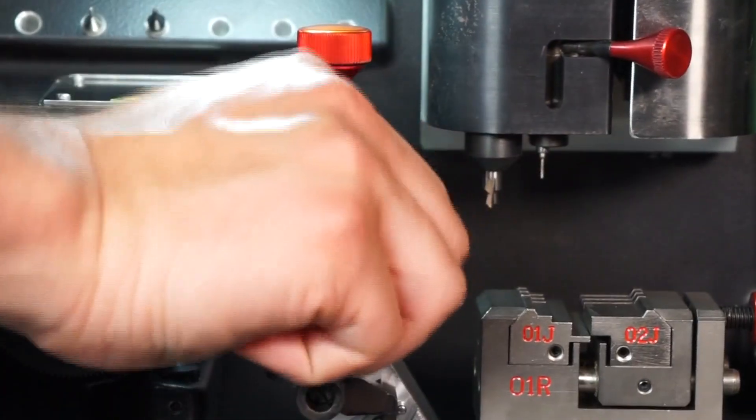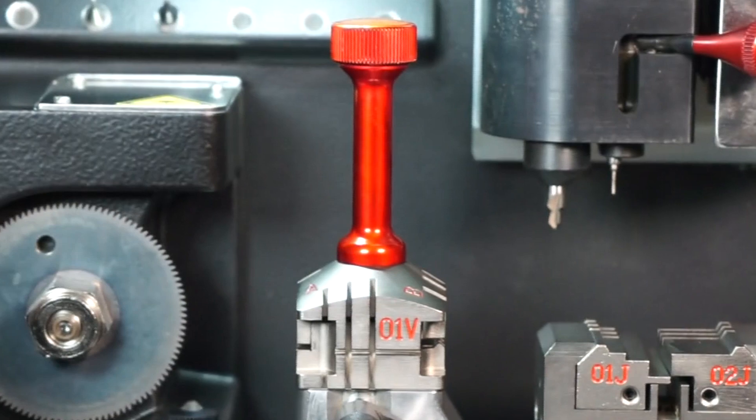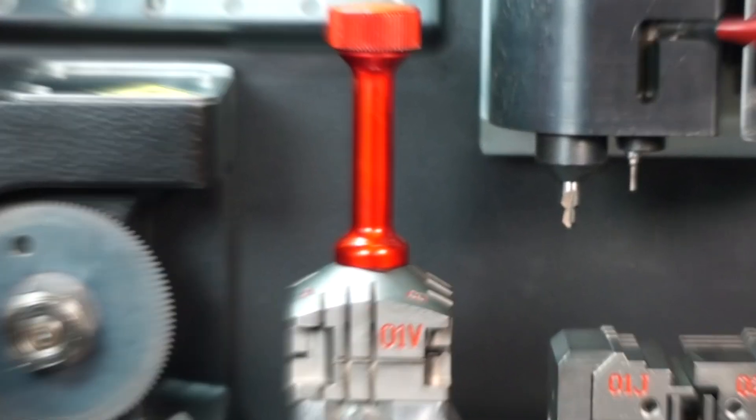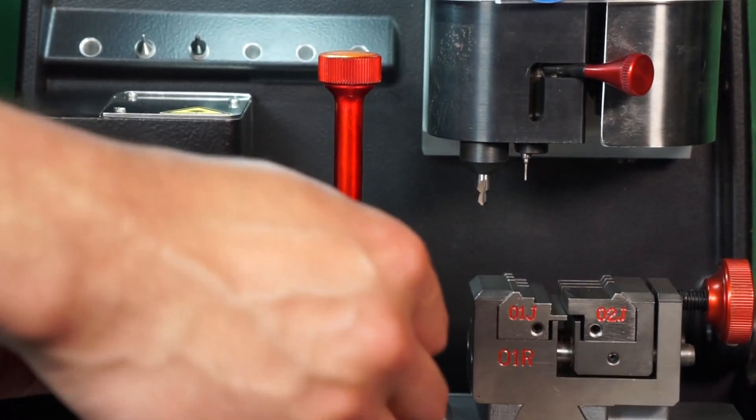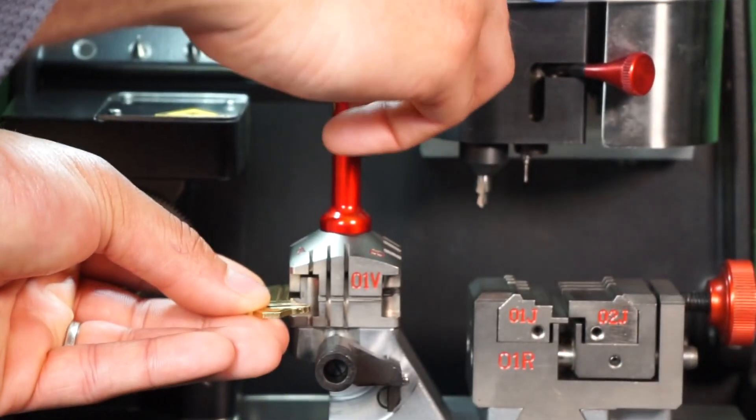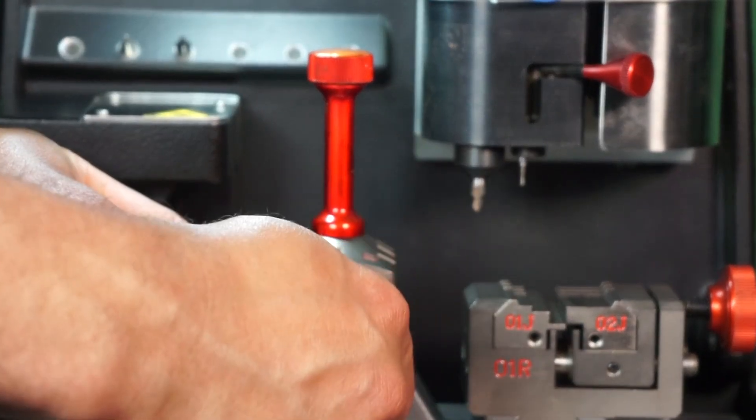Once you have the key in the groove, you can tighten the clamp down and proceed to cut the key. For your edge cut style keys, you can use clamp side A or B depending on how narrow the key is. Simply put the key in the jaw, use your shoulder gauge to stop the key in place, tighten the clamp down, and put the shoulder gauge back to its own position.